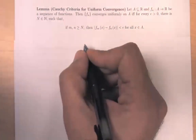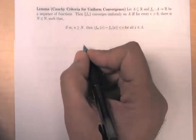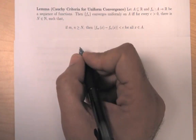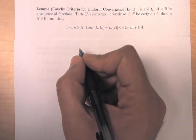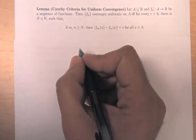Hello everyone. In the last lecture we talked about the convergence of function sequences and function series. Today we're going to talk about a few tests for determining when a function series converges, and the integrability and differentiability of convergent function sequences and series. We're going to begin with the Cauchy criteria for uniform convergence.